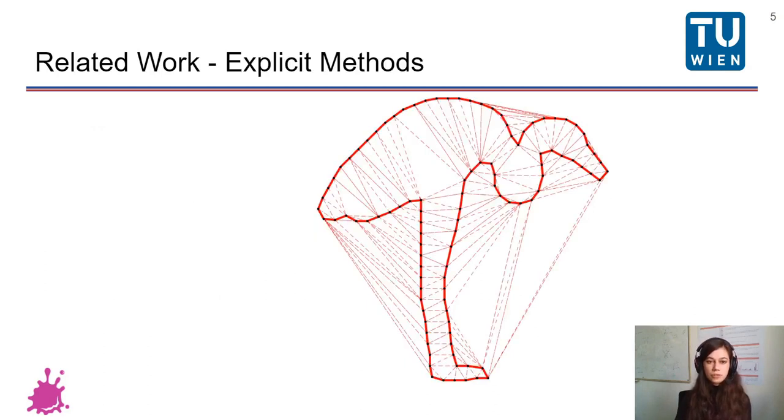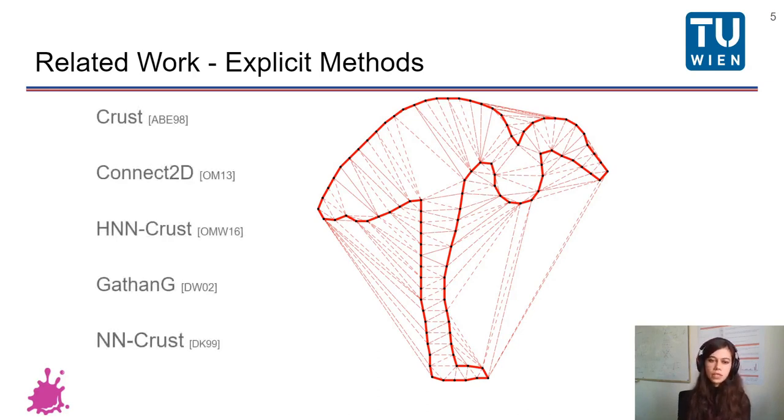But before I go into more details about our work, I'll talk a bit about related works. Related works can be put into two big categories and also others. Explicit methods and implicit methods. Explicit methods usually compute a graph on the input points. They are also called interpolatory methods because they try to get edges from this graph and that is the final reconstruction.